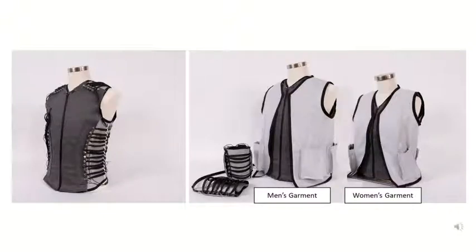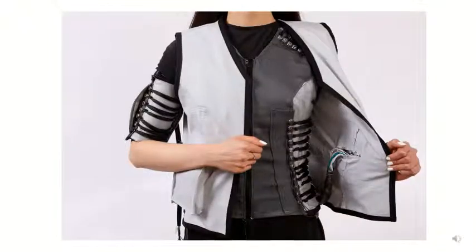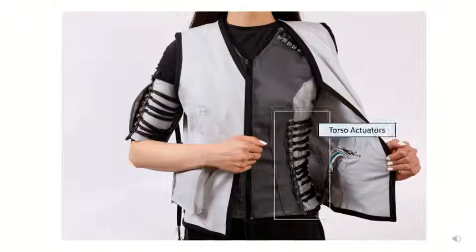The presented compression garment system consists of an inner comfort layer, a middle actuation layer, and an outer covering. The actuators are located on three body regions: both sides of the torso, the top of both shoulders, and the upper arms.